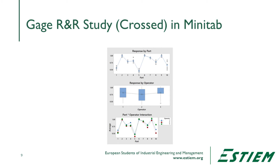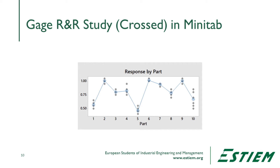Looking at the second set of three charts: the first shows measurements by part. We should see relatively consistent grouping, and we do all the way up to part 10. Something unusual is happening with part 10 — it shows a wide range of measurement response. If we see this, we might want to go examine part 10 and investigate why we're getting such a wide measurement range for it.